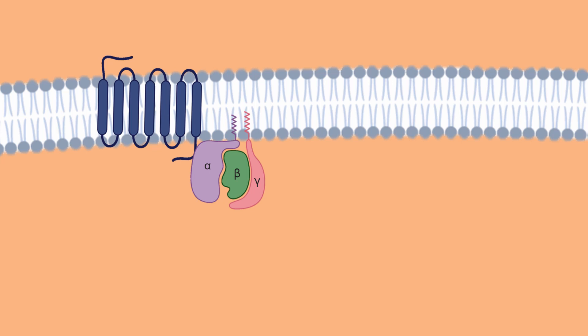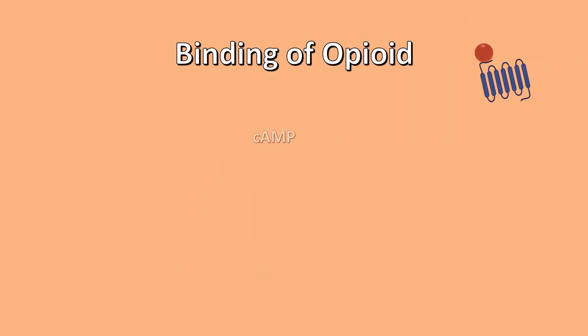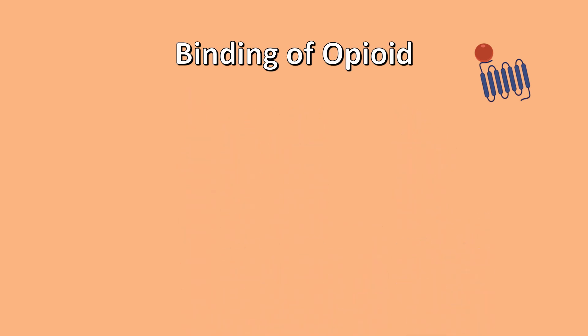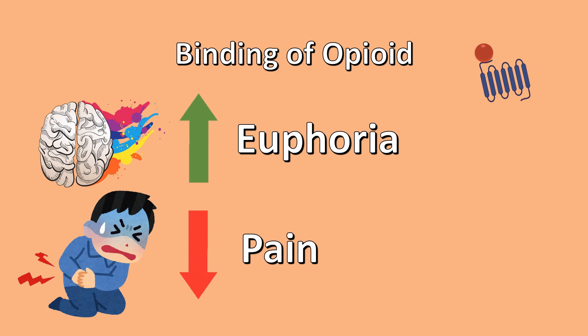Let's take a look at an example. Here we can see a mu opioid receptor sitting on the membrane of a nerve cell. When an opioid binds to the receptor, a series of steps occur which ultimately result in a reduction in cyclic AMP and hyperpolarization of the nerve cell. Ultimately, this creates euphoric and analgesic effects for the user.